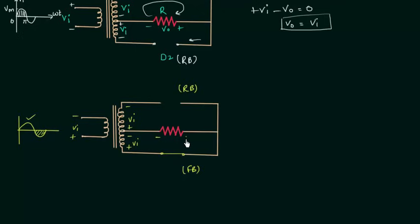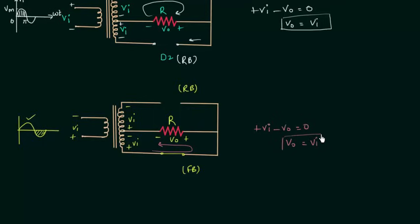We will obtain the output voltage Vo, with load resistance R. Applying Kirchhoff's voltage law and moving in the direction of current, the output voltage Vo equals Vi in this case also. In the case of a half wave rectifier we had output voltage equal to 0 for the negative half cycle, but here the output voltage equals Vi, with current flowing from right to left.